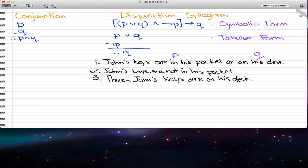Now, this statement, number two, John's keys are not in his pocket, so that is pretty much not P. And, thus, we find out that John's keys are on his desk.